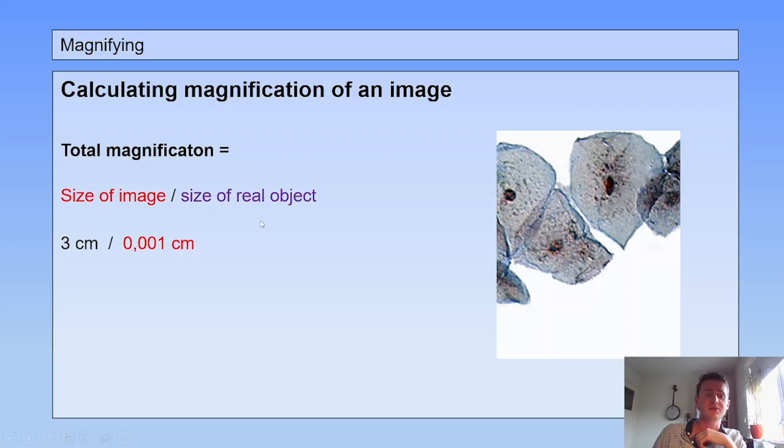Then the total magnification that was used for this image is the size of the image divided by the size of the real object, and in this case that would be 3,000 times.